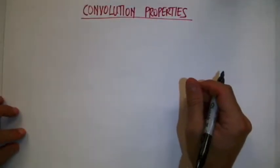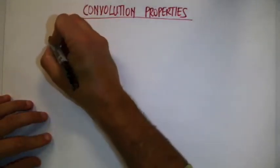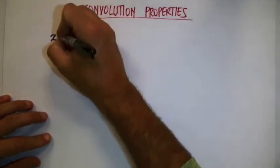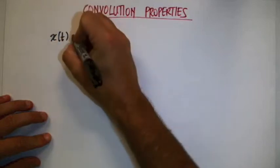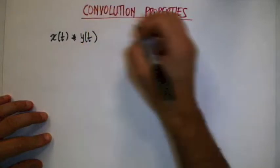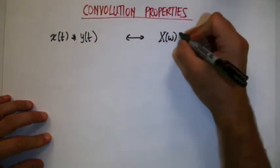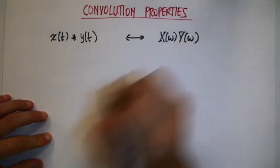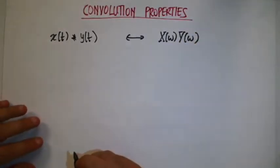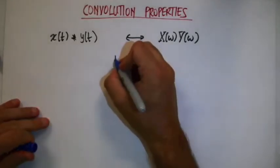Let's study the convolution properties of the Fourier transform. We know that if we have the convolution of two functions, the correspondent Fourier transform is equal to the product of the two Fourier transforms. And now we can exploit duality.